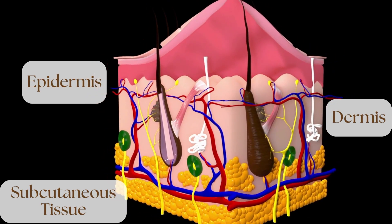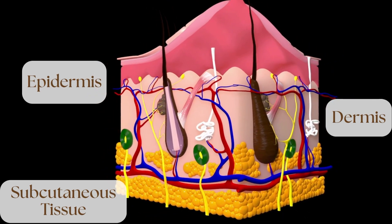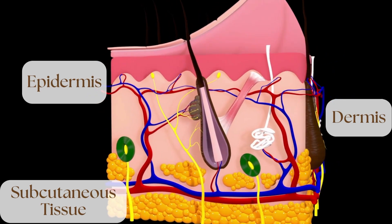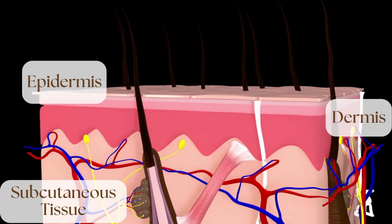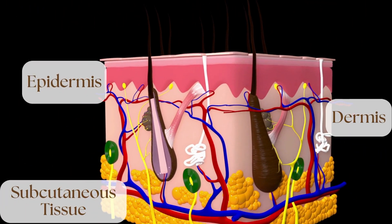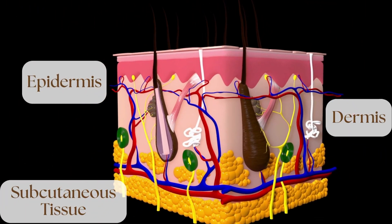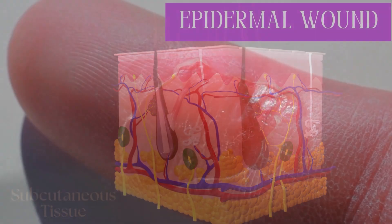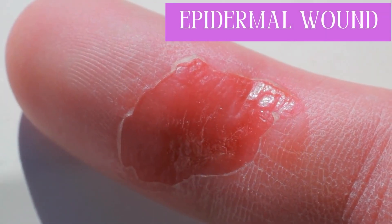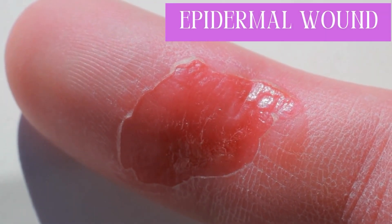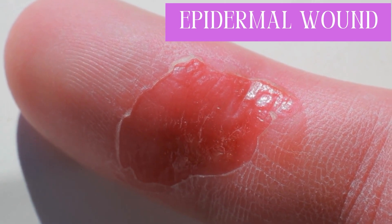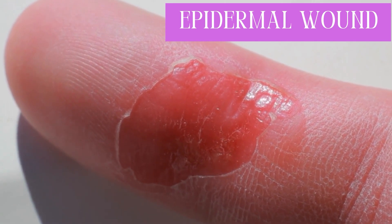When the skin is damaged, the type of healing process that occurs depends on the depth of the injury. An epidermal wound, such as a minor abrasion or minor burn, does not penetrate the dermis. Its healing is a simple process in which surrounding basal epidermal cells multiply and migrate across the wound until it is covered.